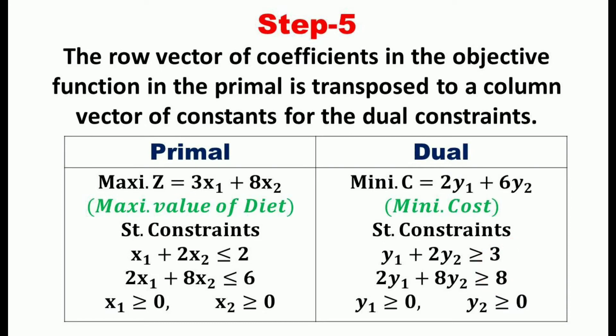These are the various steps towards the formulation of the dual problem. The dual problem is: minimize c = 2y1 + 6y2, subjected to y1 + 2y2 ≥ 3, 2y1 + 8y2 ≥ 8, and y1, y2 ≥ 0, where y1 and y2 are the two decision variables in the dual problem.